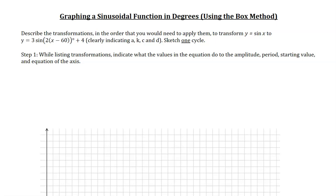The question is the same as the one I used in my last video where I talked about how to use transformations. It says, describe the transformations in the order that you need to apply them to transform y equals sine x to y equals 3 times sine 2(x minus 60 degrees) plus 4, clearly indicating a, k, c, and d, and sketch one cycle.